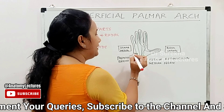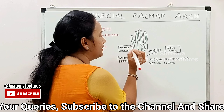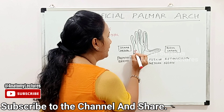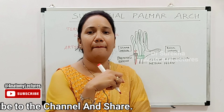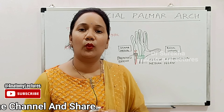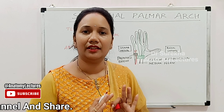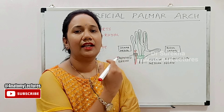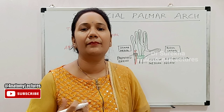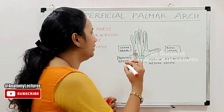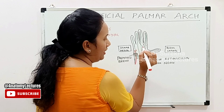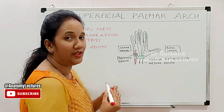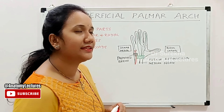The terminal part of the ulnar artery and the terminal part of the radial artery anastomose to form the superficial palmar arch. This forms the major blood supply to the hand. It is formed by the anastomosis between the terminal parts of the ulnar and radial arteries. This is an arterial arcade which is present in the palm.